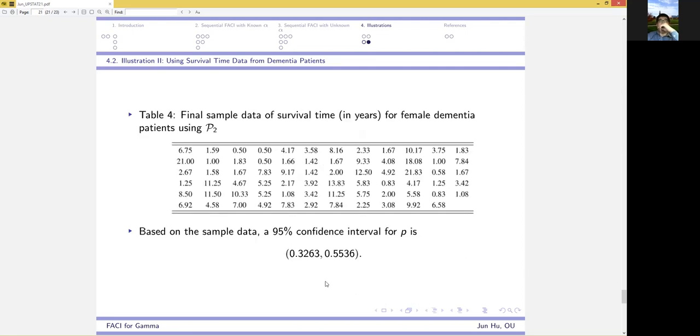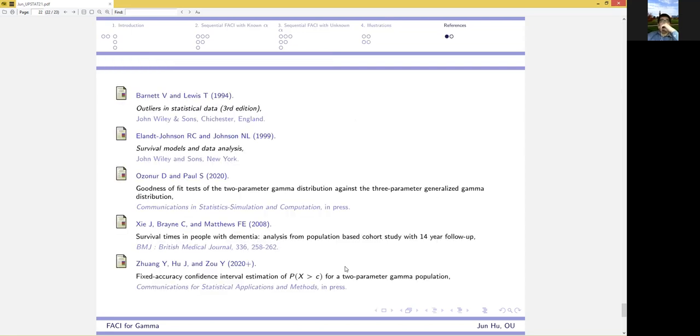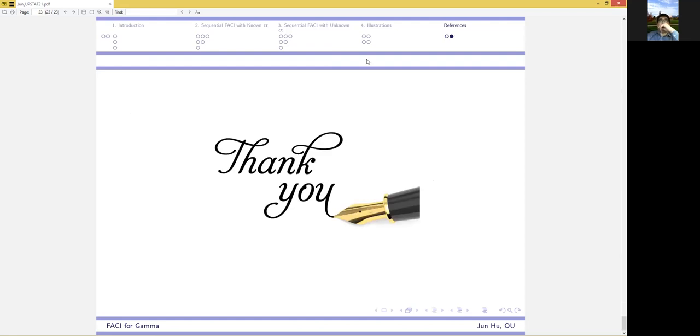Setting these numbers, we implement the procedure P2 to collect the following sample data. And 95% confidence interval for p is given here. Okay, so here are some references and that's it. Thank you. If you have any questions.